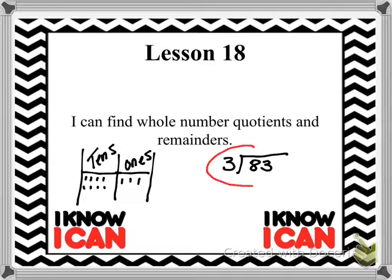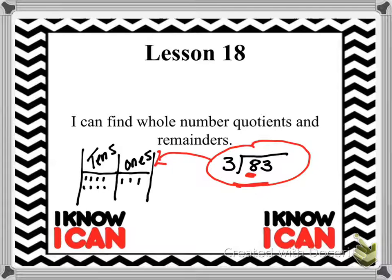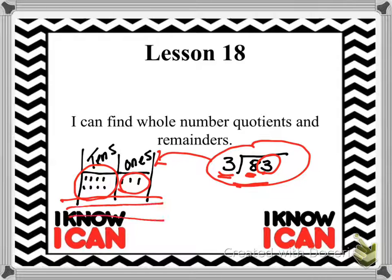So this one's 83 divided by 3. You can still continue to use the place value chart to help you answer this division problem. If you wanted to take apart the 8, that's an 80, so we would put 8 tens, and then we would have 3 ones. This is what we're dividing by, so we would break this up into 3 groups. If you still want to do it that way, that's okay — you can still do it like we have in the previous lessons.